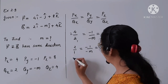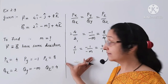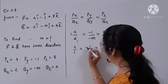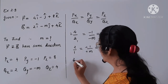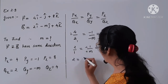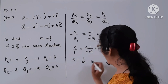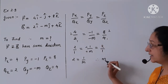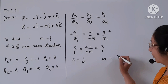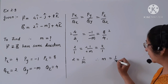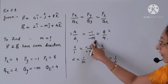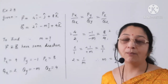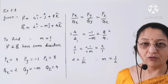The negatives cancel — minus divided by minus gives plus — so 2 is equal to 1 upon m. Therefore, m is equal to 1 upon 2. So the value of m is 1/2.